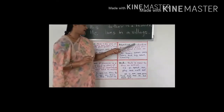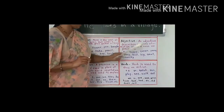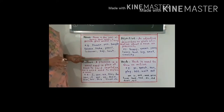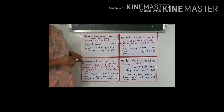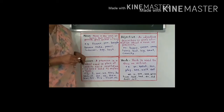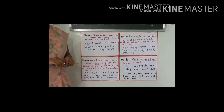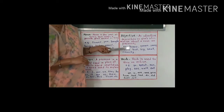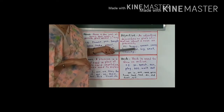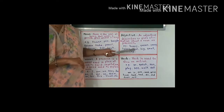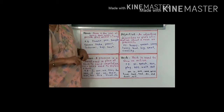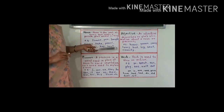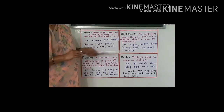An adjective describes or gives information about a noun or pronoun. It tells about the color, look, and nature of a noun or pronoun in a sentence. Look at some examples of adjectives: happy, green, young, funny, bad, big, small, crunchy. They are also called describing words because they describe something.